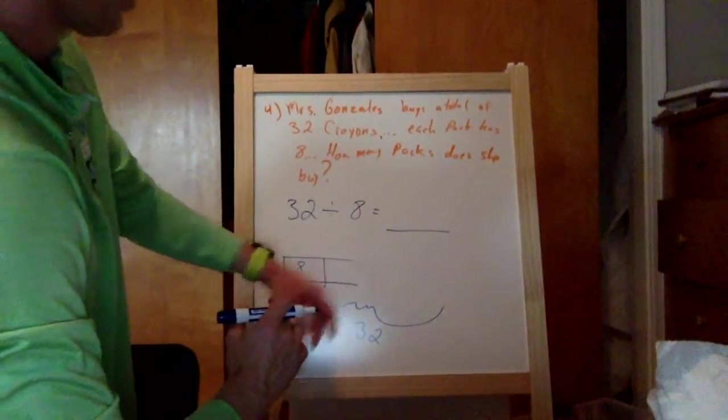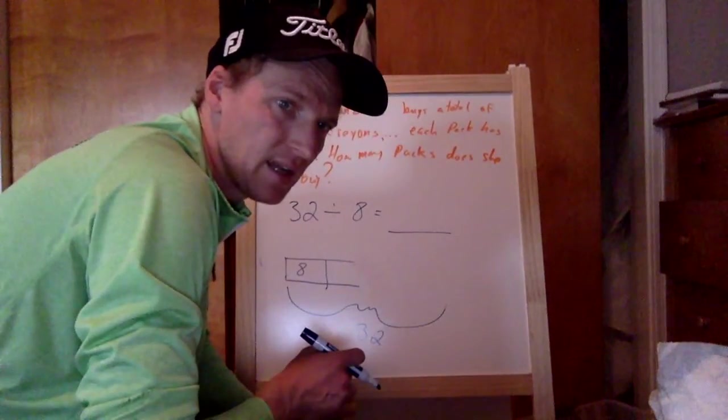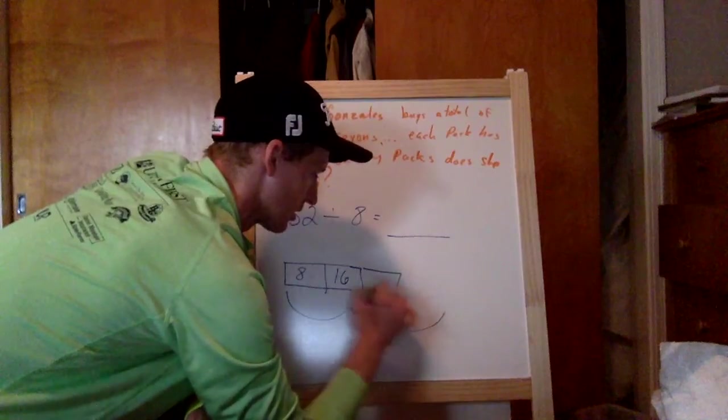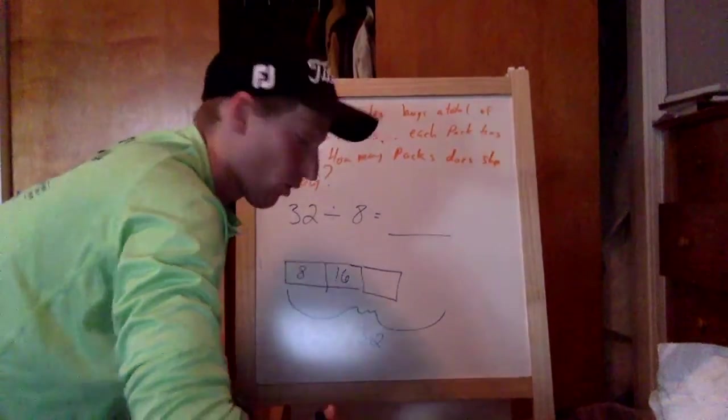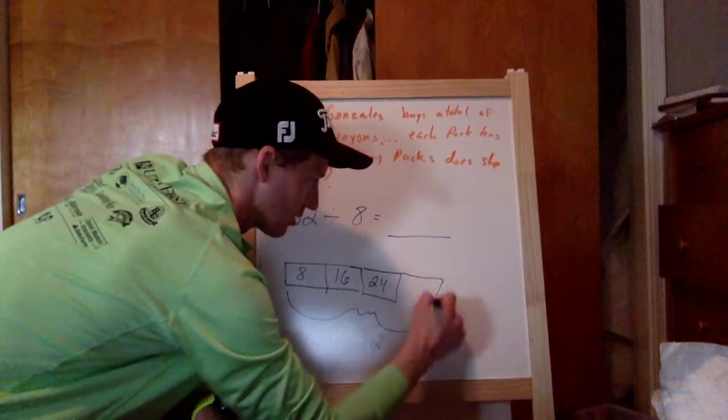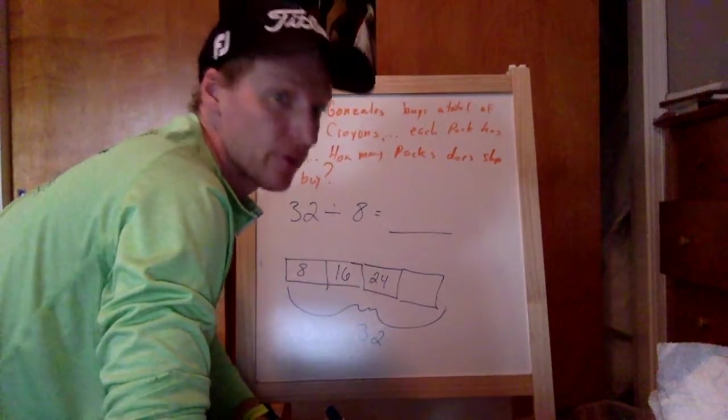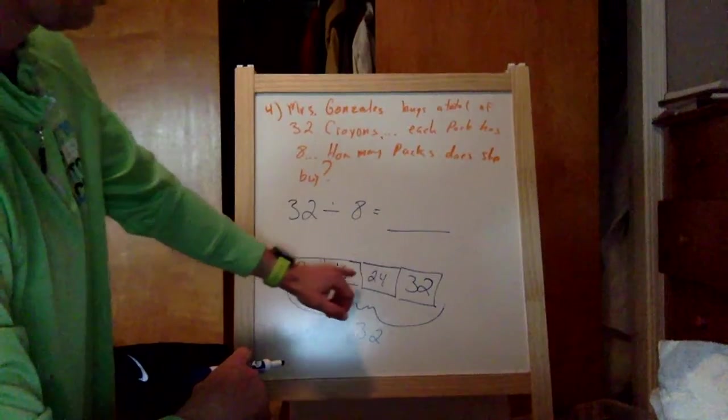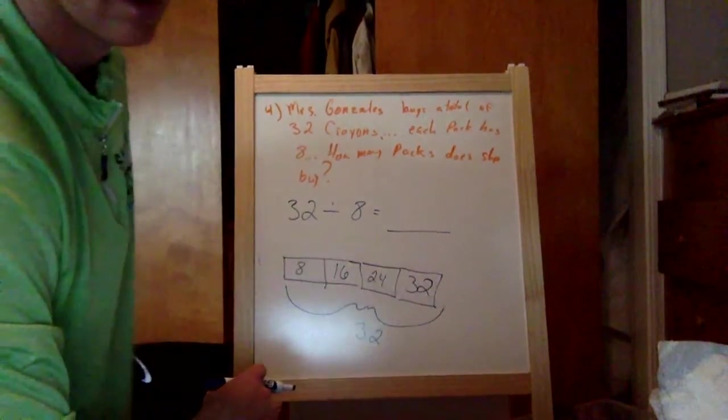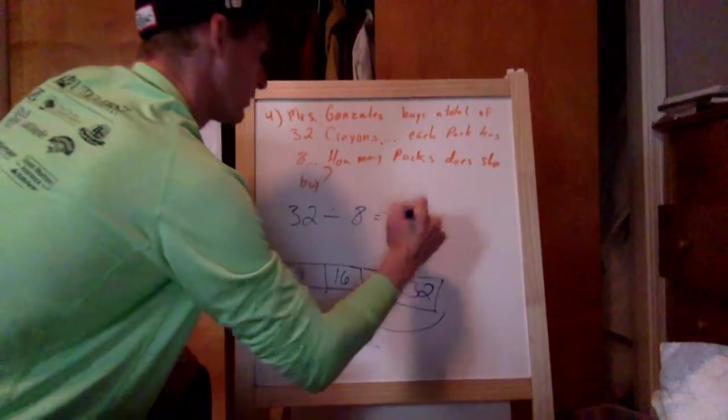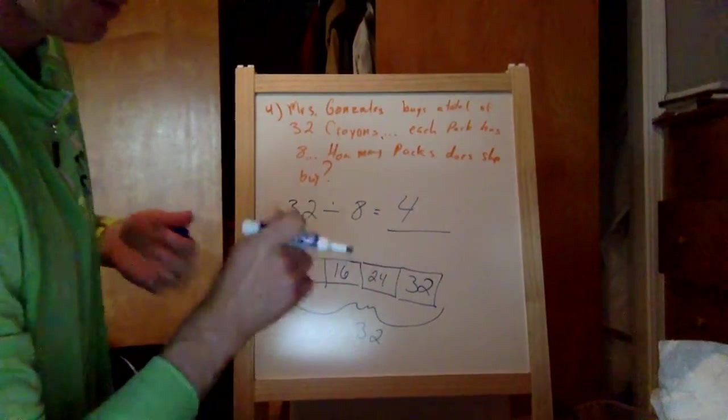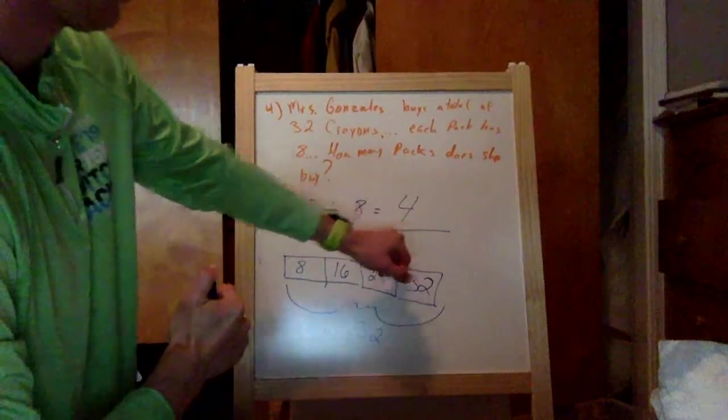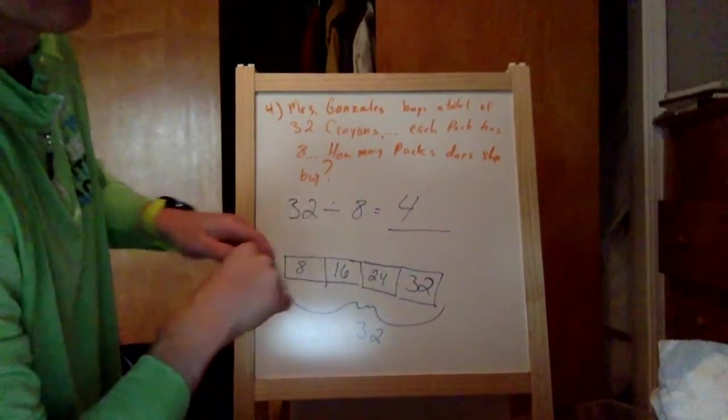Let's do it this way. We got eight. Next one, we want to know our eights. Eight, sixteen, twenty-four, thirty-two. How many boxes did she buy? Count the boxes. Four. We had 32. We broke it up into eight crayons in each of them, and then they want to know how many boxes we needed. She bought four boxes.